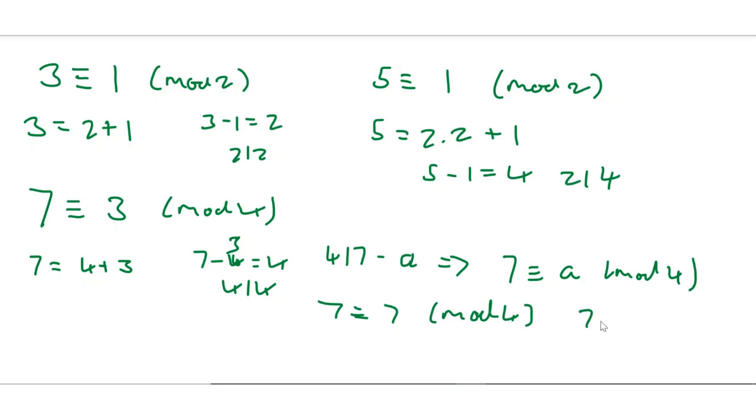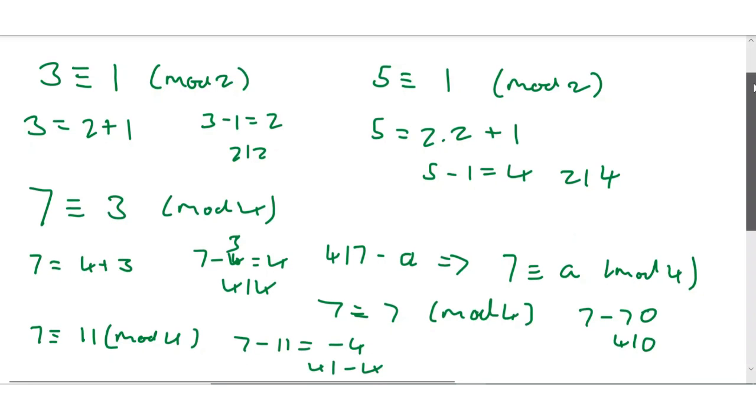Because if you look, 7 minus 7 equals 0 and 4 divides 0. Or 7 is congruent to 11 mod 4, because 7 minus 11 equals minus 4 and 4 divides minus 4.